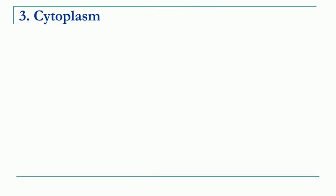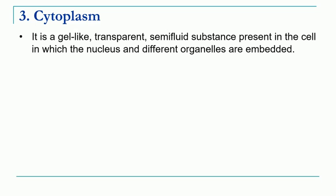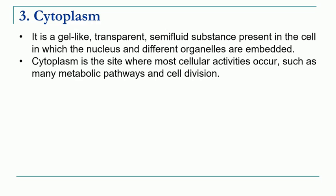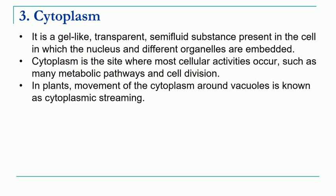We come to inside of the cell. The cell has a liquid jelly-like material that is semi-fluid in appearance, which is called as cytoplasm, in which all the organelles of the cell are present. Cytoplasm is the site where all the cellular activities, metabolic pathways, as well as cell division takes place. In case of plants, movement of cytoplasm around the vacuoles is called as cytoplasmic streaming.